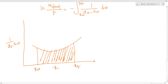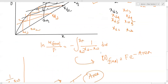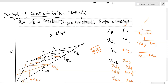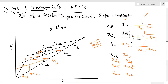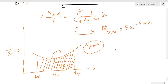We can use Simpson's rule to evaluate the area under the curve. Then W_final is equal to F times e to the power of negative area. If you can find this area from the graph, you can solve the problem easily. You can also use an alternate reflux method depending on the function.